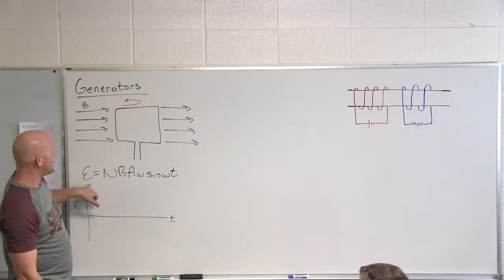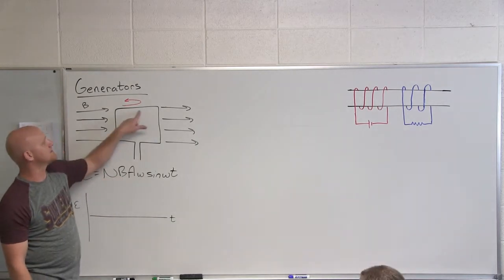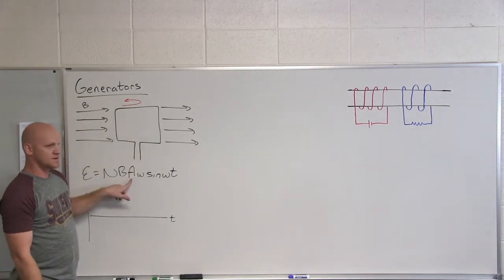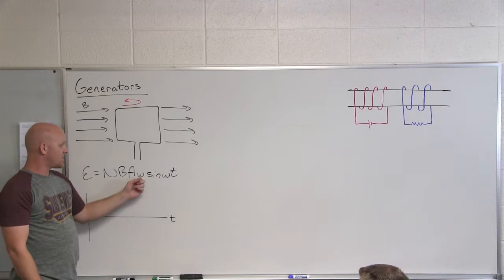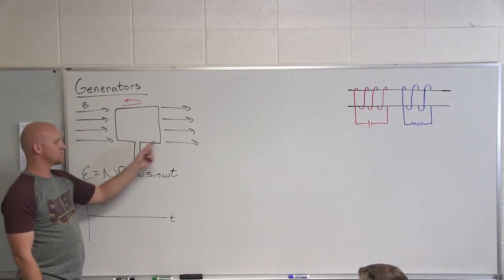So the EMF actually follows this equation: depends on how many turns you have, depends on the strength of the magnetic field, depends on the area of the coil. And then it depends on how fast you're rotating it, on the angular velocity in which you're rotating the coil.